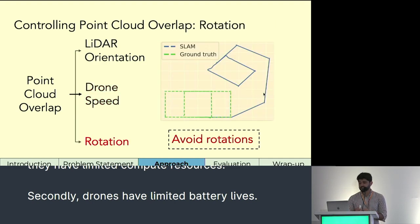In rotational motion, the overlap between consecutive frames is relatively smaller. In an experiment shown in this figure, SLAM is thrown off by a single rotation. So when possible, AeroTraj should avoid rotations.